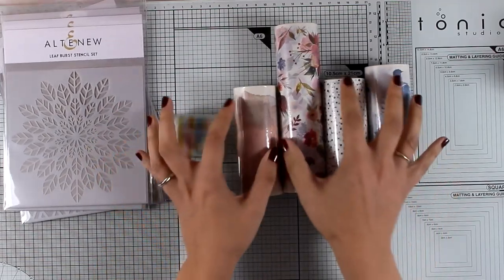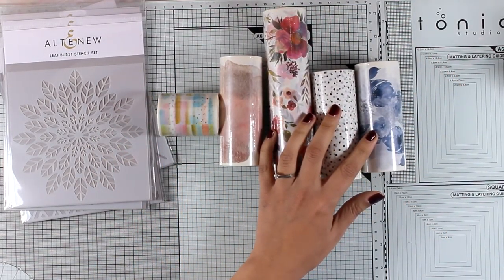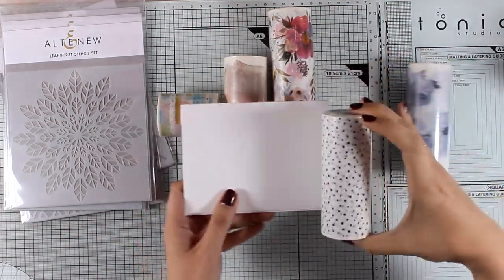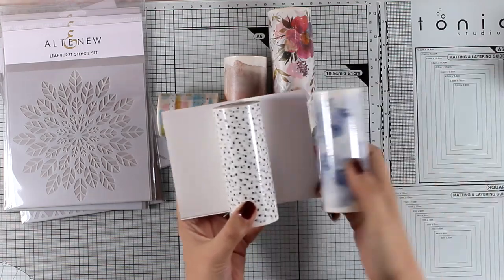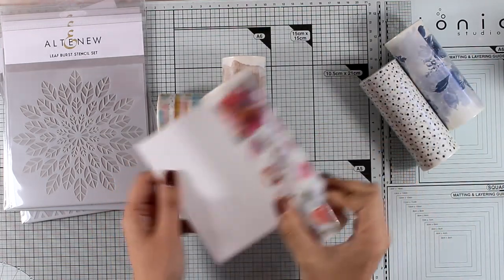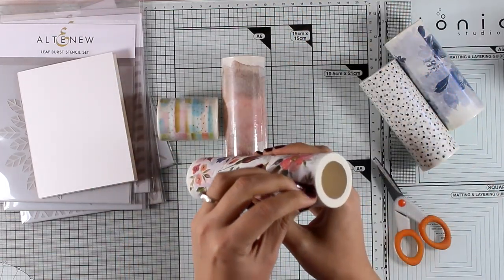But what is really exciting about this release are the washi tapes. So these are white washi tapes in beautiful colors and here is a standard card that's four and a quarter by five and a half so you can see how white they are they could easily cover up the front of your card. And let's open up these rolls so you can see how beautiful these washi tapes are.